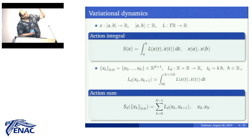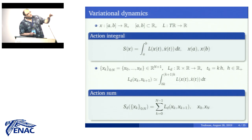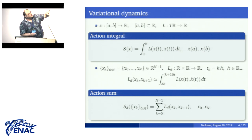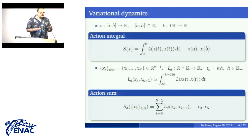On the discrete side, what we do is we replace continuous curves by a discrete sequence of points in the given configuration manifold, and we approximate the action in one time step of the time grid, which is defined by tk equal to kh, with h being the fixed time step. We approximate the action integral in one time step and define that as the discrete Lagrangian. Then we sum over all our time grid and we obtain the discrete action sum.